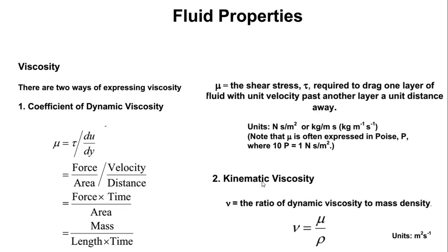To define viscosity from Newton's law: making mu the subject gives mu = tau divided by velocity gradient. The units for dynamic viscosity are Newton-second per meter squared. Another unit used is Poise (P), where one Newton-second per meter squared equals ten Poise. You need to know how to convert between Poise and Newton-second per square meter. This quantity is known as dynamic viscosity.